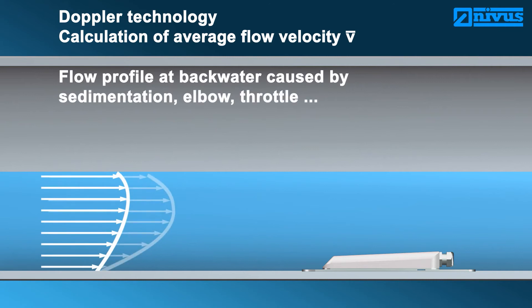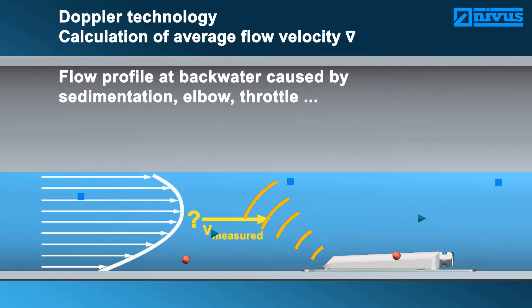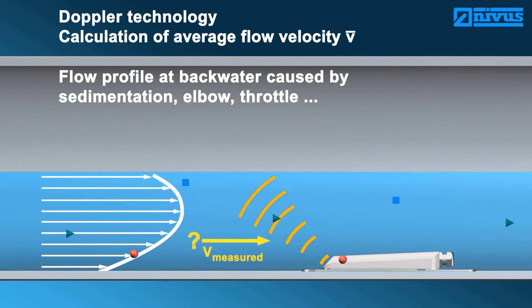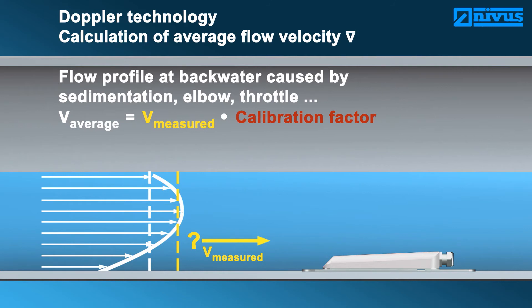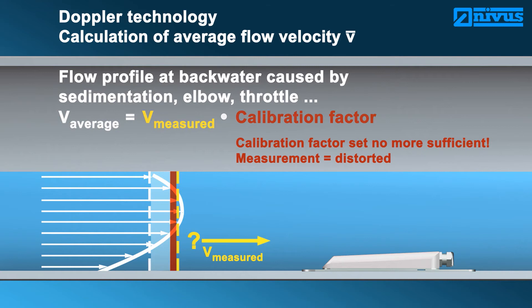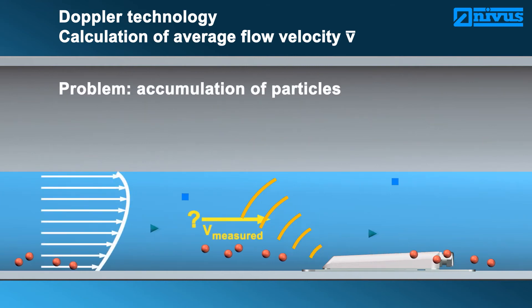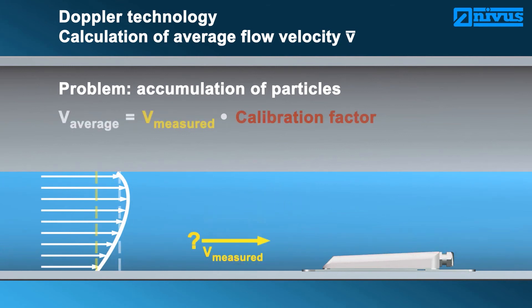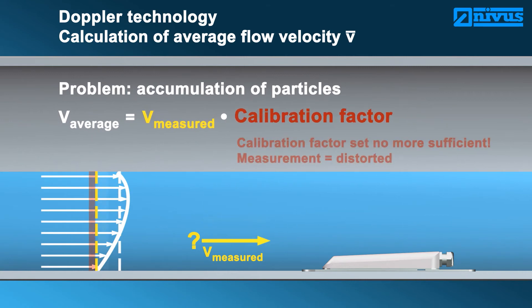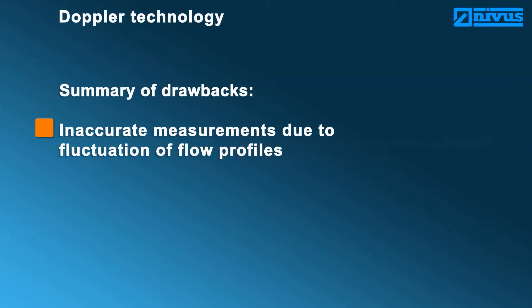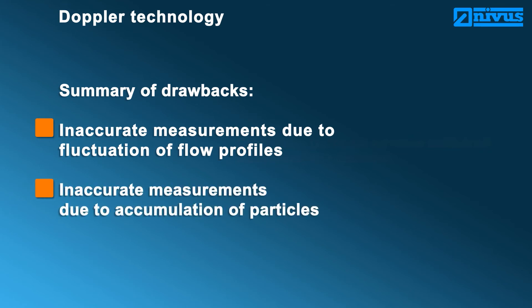The flow conditions will change even in case of backwater formation caused by sedimentation, elbows, or throttle equipment. The original calibration factor is no longer valid, and the measurement results are faulty. Accumulation of particles generates a stronger measurement signal and hence is determined by the sensor as the measurement spot. A local variation therefore creates a distorted reading which varies from the calibration. The shortcomings of Doppler measurement systems in brief: faulty results at varying flow profiles, faulty results in case of changing particle concentration, and no permanent calibration possible.